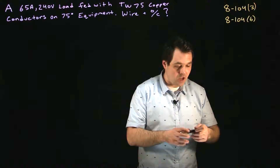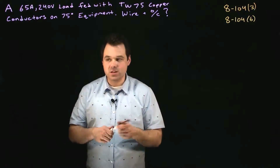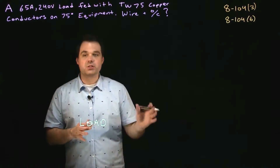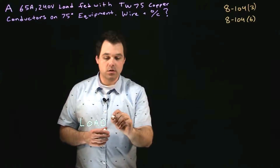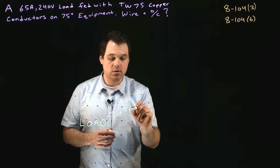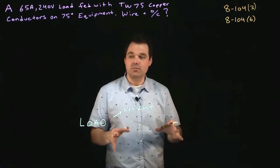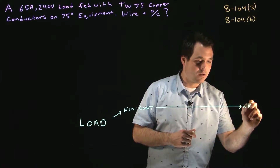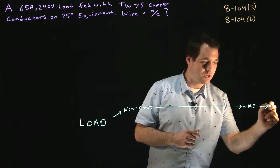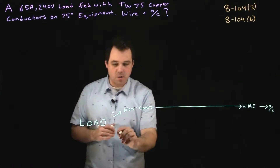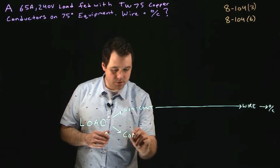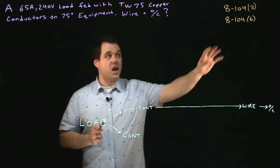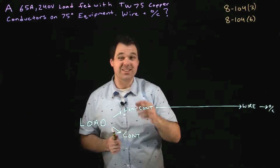So we end up with a process. We start with our load and determine: is it continuous or non-continuous? If it is non-continuous, it's easy — the load isn't running all the time, it's not producing a lot of heat, so we simply size a wire and size an overcurrent device. However, if we have a continuous load — and remember, 8104 Subrule 3 tells us all loads shall be deemed continuous unless told otherwise — the process is different.